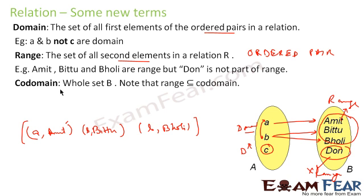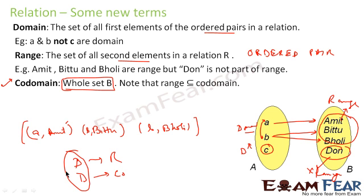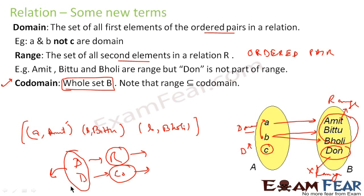There is one more term: codomain. Codomain is the whole set B. In our example, codomain = {amid, bit2, boli, don} — everything in B, regardless of whether it appears in an ordered pair. So to summarize: domain includes all first elements of ordered pairs; range includes all second elements of ordered pairs; codomain includes all elements of set B.